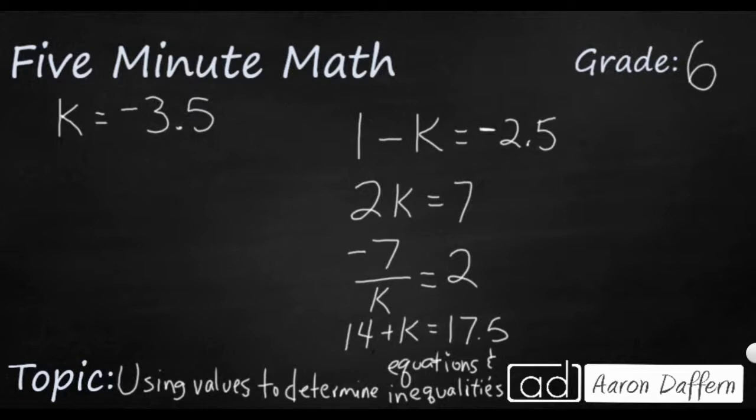So sometimes in 6th grade you're going to see a problem that looks like this. They're going to give you the unknown. So in this case they're going to say k equals negative 3.5, or negative 3 and 5 tenths. And then they want you to plug it into each of these equations and find the one that works. So if this were a multiple choice test this would be a, b, c, and d. And it would only work in one.